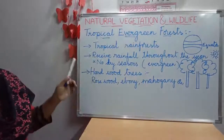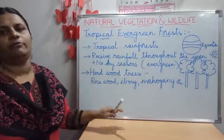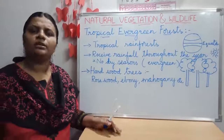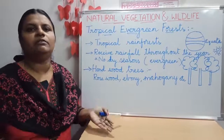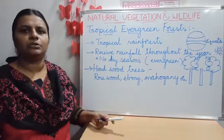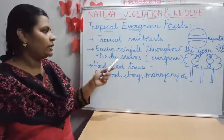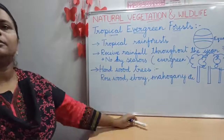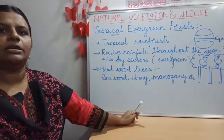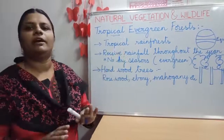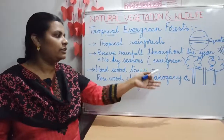There is rainfall throughout the year in this region, so it remains hot and wet. Daytime it will be very hot and nighttime very cold, and by evening it rains every day. That's why the region remains hot and wet, and there is no dry season for this forest. That's why the trees in this region will never shed their leaves, and they remain evergreen.